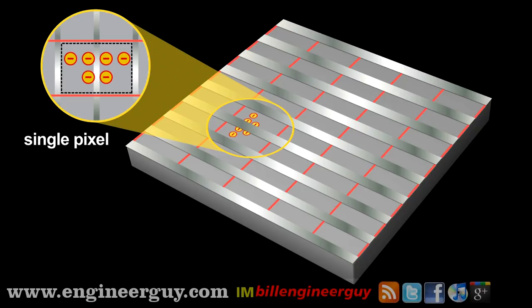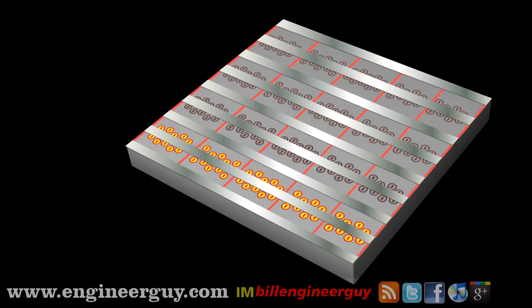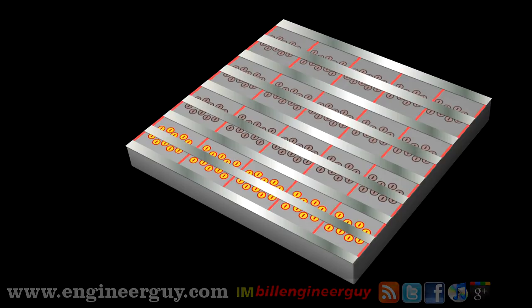Recall that when light strikes the whole array, the silicon pixels build up charge proportional to the intensity of the light striking them. We then have a captured image stored as charge within each pixel. The great innovation of the CCD was how it moved the image from the silicon array to the camera's memory system without using external wires that would distort the image.